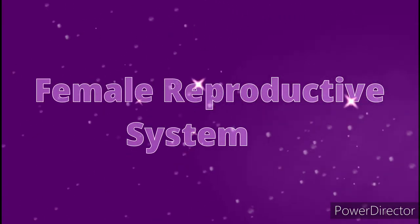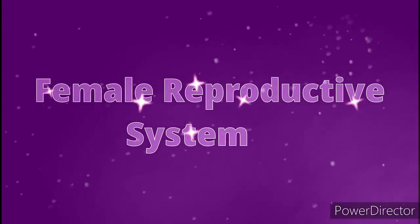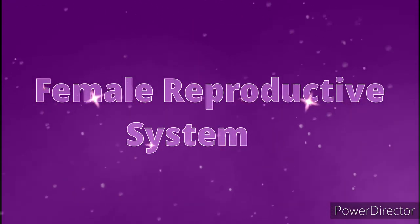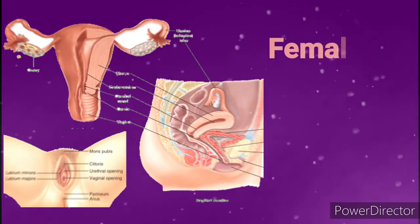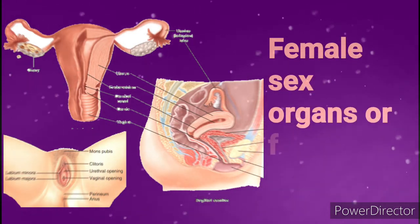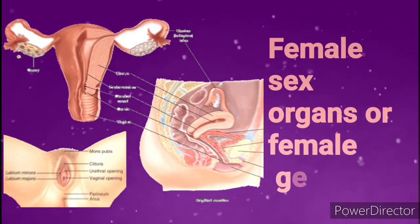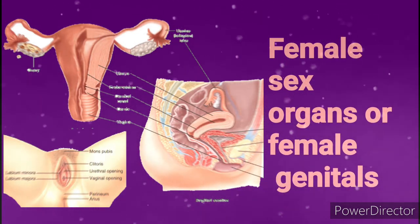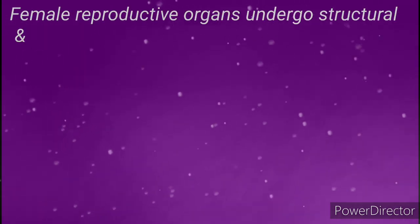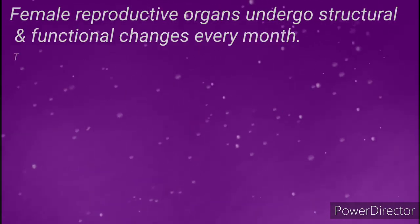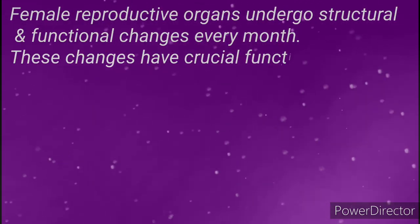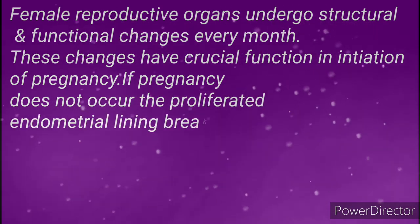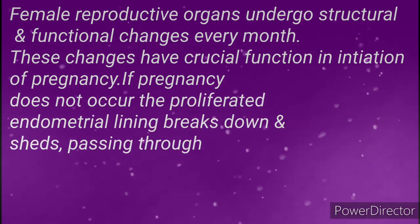Hello guys, today's topic is the female reproductive system. Here I will give you short information about female sex organs, also known as female genitalia or female reproductive organs. The organs of the female undergo structural and functional changes every month.